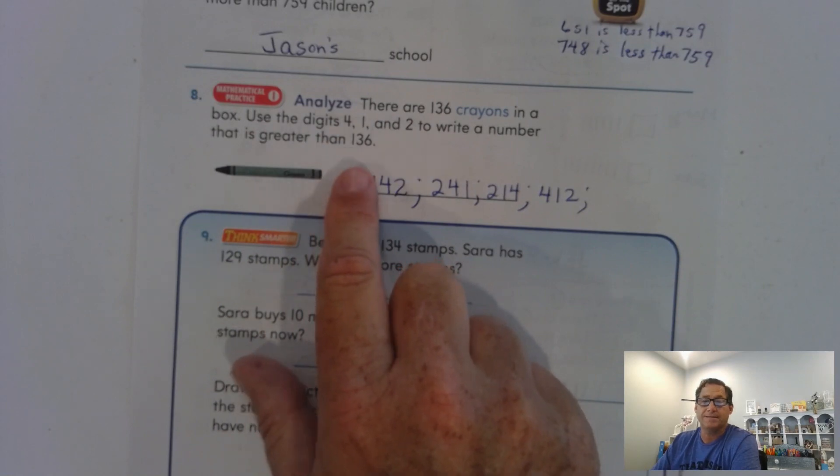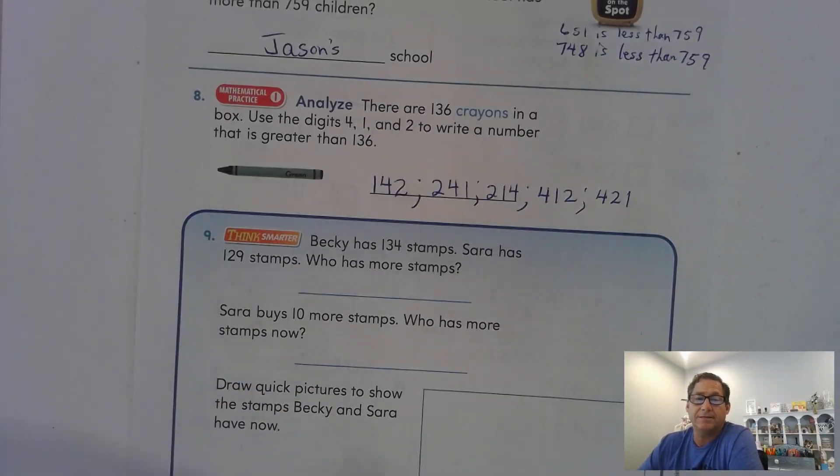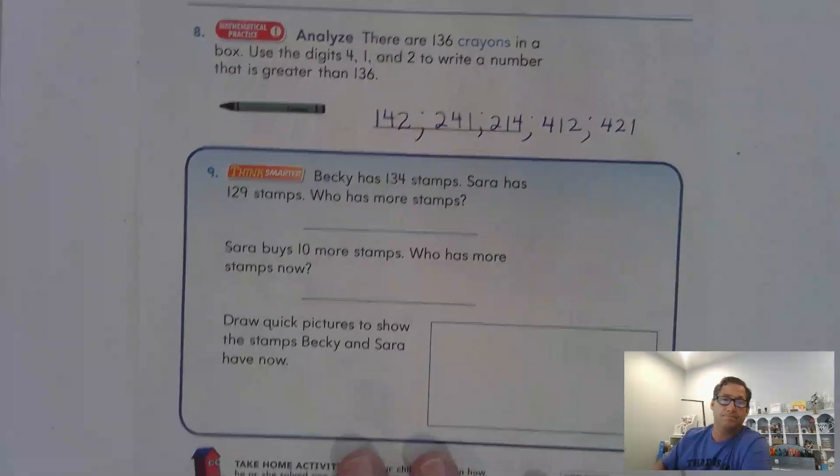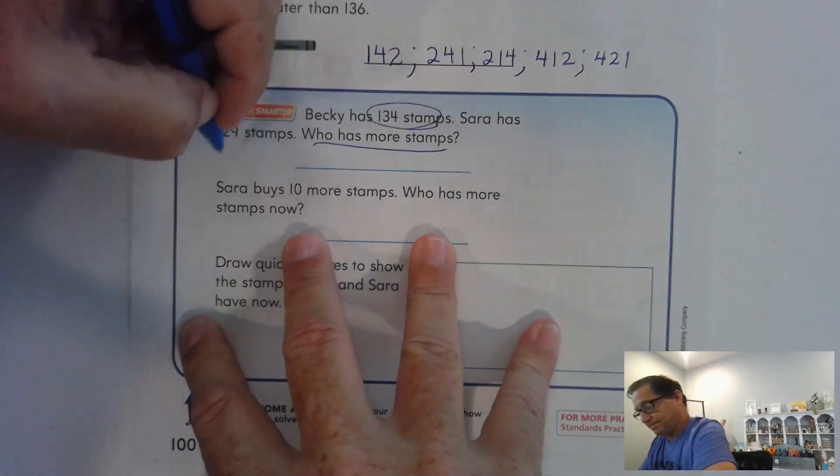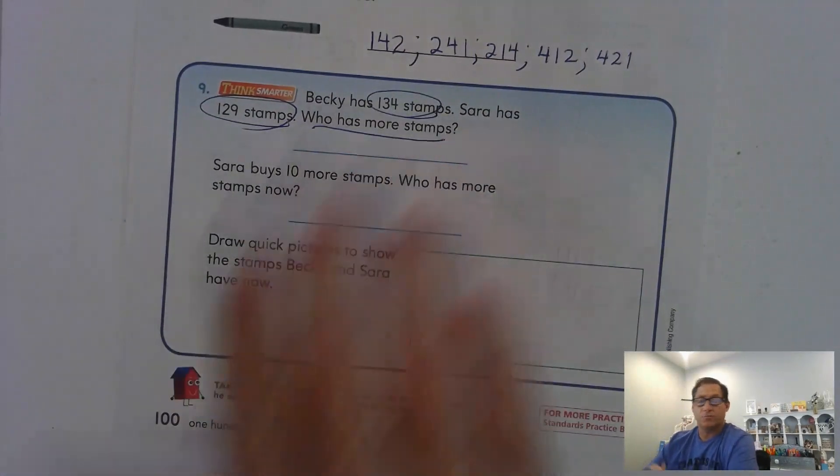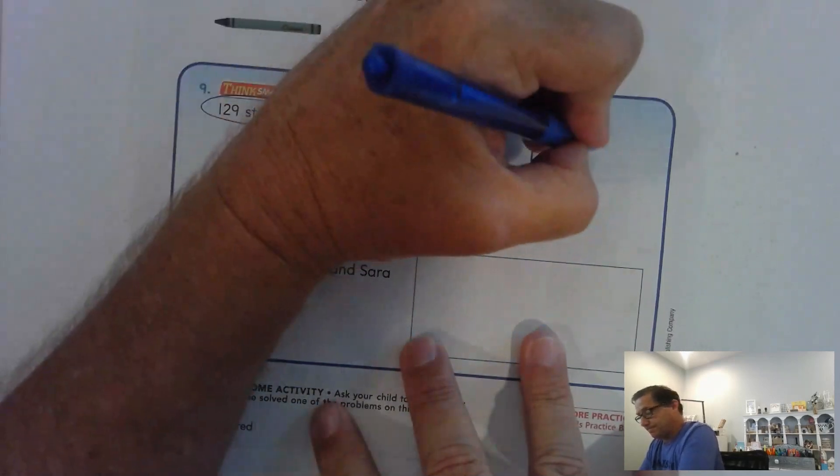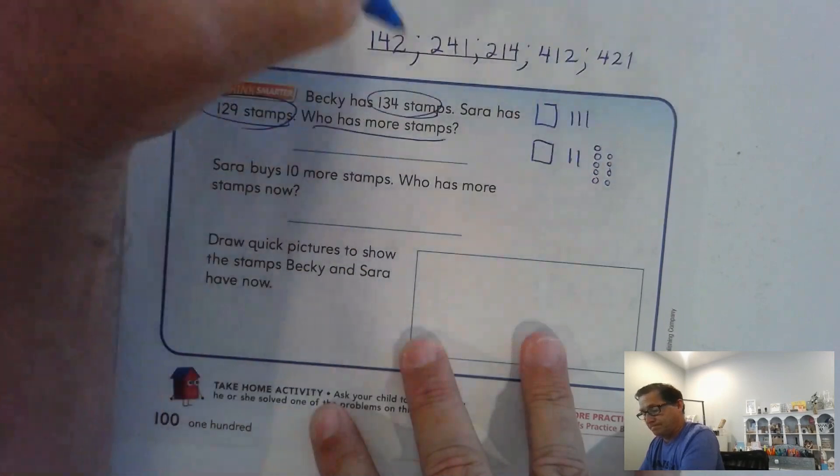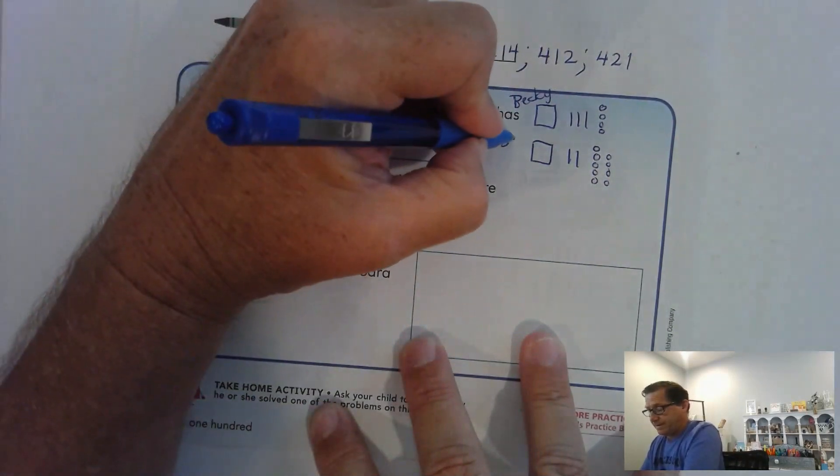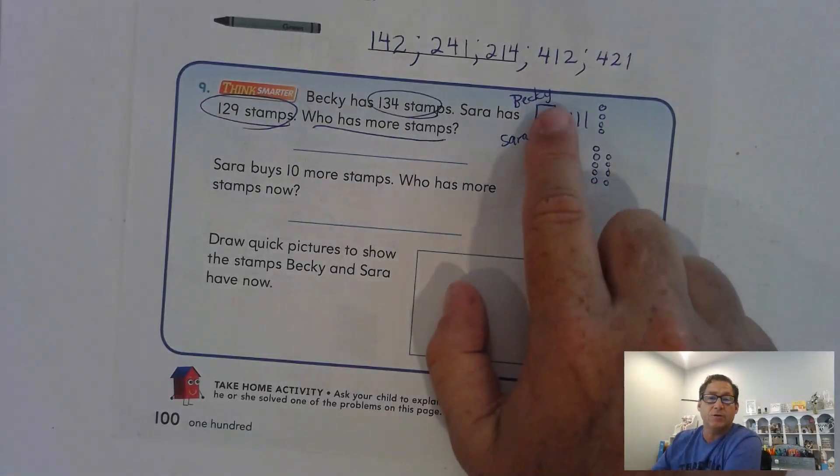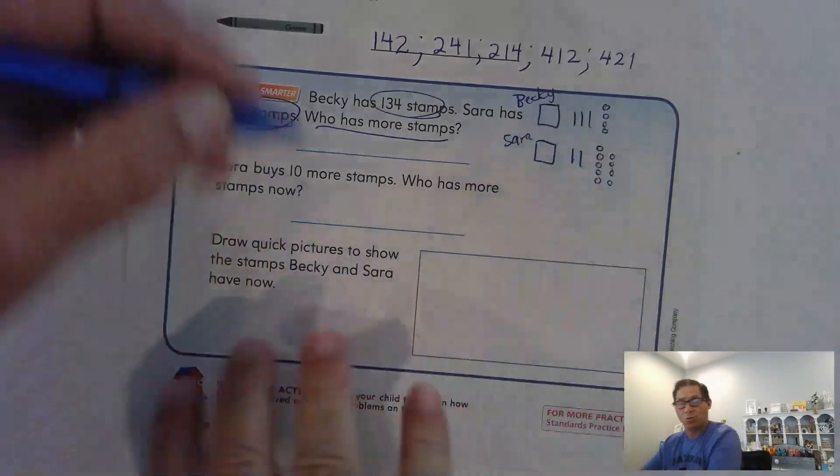Number nine. Becky has 134 stamps. Sarah has 129 stamps. Who has more stamps? So if we're comparing who has more, Becky has 134, and Sarah has 129. So if we compare the hundreds, those are the same. But three tens is more than two tens. So Becky has more stamps than Sarah.